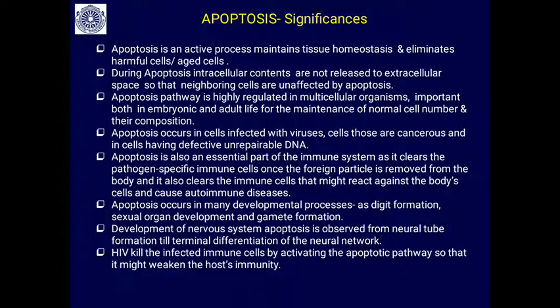Apoptosis occurs in many developmental processes including digit formation, sexual organ development, gamete formation, and nervous system development — from neural tube formation through final neuronal network establishment. Apoptosis also occurs in cells infected with viruses, cancerous cells, and cells with defective irreparable DNA, preventing damage from being transferred to daughter cells. HIV kills immune cells by activating the apoptotic pathway, thereby weakening host immunity.